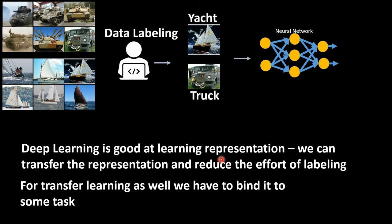But in order to do this transfer learning as well, you need to bind it to some task. For example, here if you are doing transfer learning to learn representation from this new image, say yacht and truck, then again you have to bind it to a task, say yacht versus truck classifier, in order to learn the representation. Again, there is this challenge.